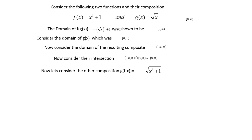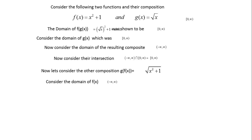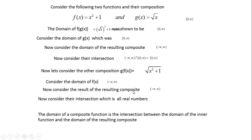Now consider the other composition, g of f of x. We weigh in on the innermost function f of x, whose domain is all real numbers from negative to positive infinity. Then we ask what is the domain of the resulting composition — the square root of x squared plus 1. Since x squared plus 1 is always positive, its domain is all numbers. The intersection of all numbers with all numbers is all numbers. So the domain of a composition function is the intersection between the domain of the inner function and the domain of the resulting composite.